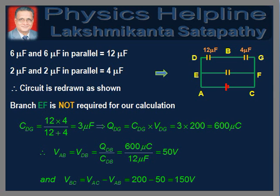The potential difference across A and B is equal to the potential drop across the 12 microfarad capacitor, which is 600 microcoulombs ÷ 12 microfarads = 50 volts. Therefore, the potential difference between points B and C is equal to 200 − 50 = 150 volts. This completes the answer to the question.